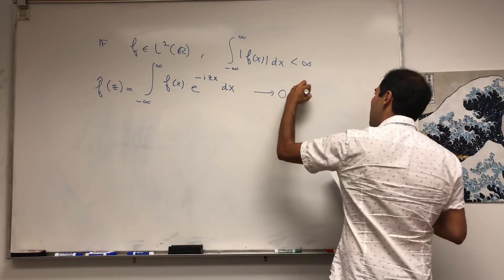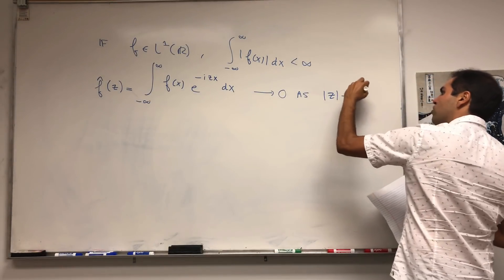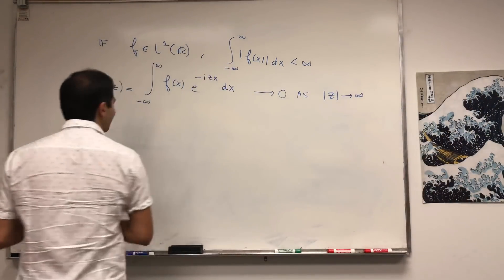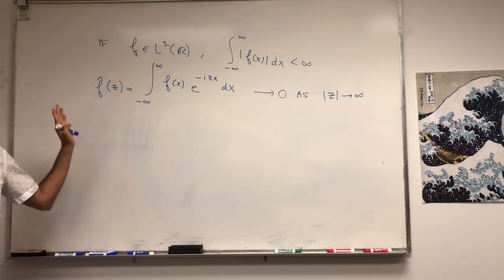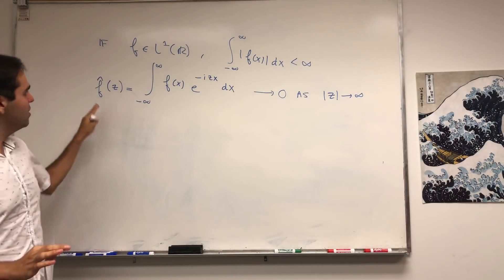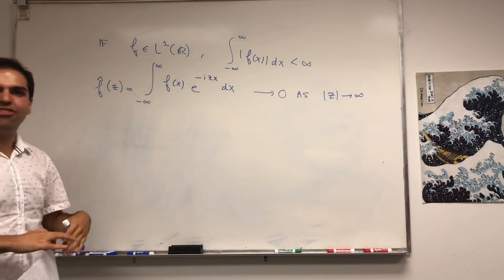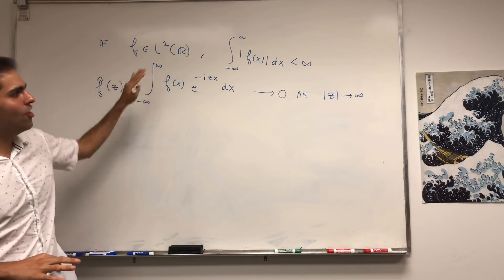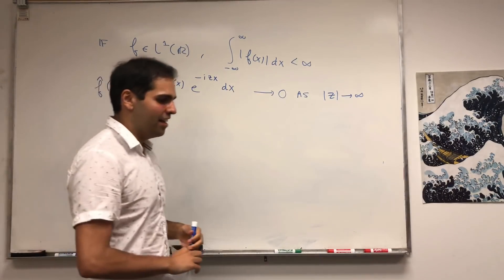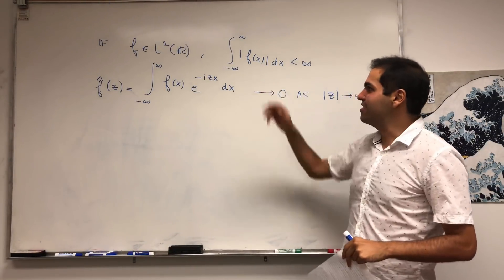It goes to zero as z goes to infinity, but also minus infinity. In general, z could be any complex number, so if z gets infinite modulus, then this goes to zero. It illustrates how nice integrable functions are. The Fourier transform measures how squiggly or oscillatory the function is, and we're claiming that if a function is integrable, the oscillations sort of go to zero. In particular, if the oscillations don't go to zero, the function is so wild that it's not integrable.